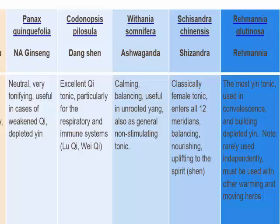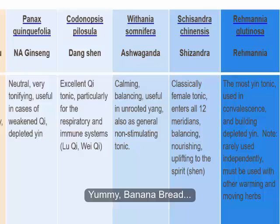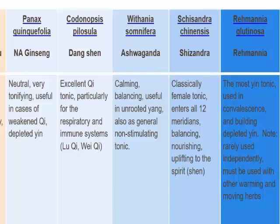In cases of extreme yin deficiency where we've got a very pronounced yang pattern or empty heat pattern — a lot of anxiety, insomnia, restlessness — Rehmannia becomes a core part of our treatments. You can give it in little squares; it tastes a little bit like banana bread. But you wouldn't want to do that for more than five, maybe seven days, because we start to see yin excess symptoms creep in — heaviness, particularly in digestion, almost a greasy feeling that comes with too much Rehmannia.